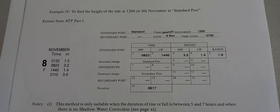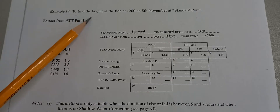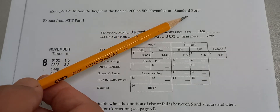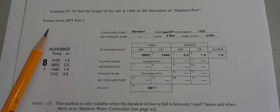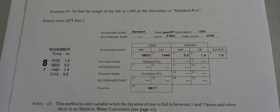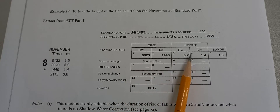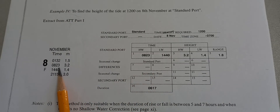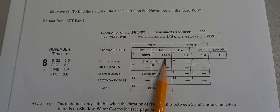We're going to have another example on how to compute tides using the Admiralty Tide Tables Part One. Our problem is to find the height of tide at 1200 on 8 November at the standard port. We extract the Admiralty Tide Tables Part One to fill up the tidal prediction form. In boxes one through four, you're going to extract 0823 as the high water and 1440 as the low water.